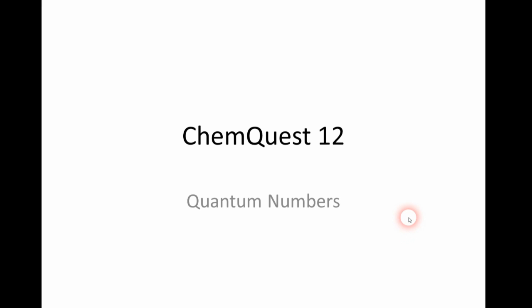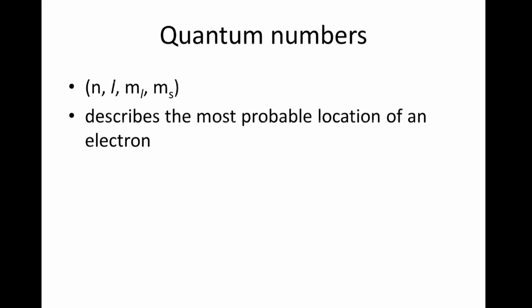We're going to be talking about quantum numbers today. The main concept is that the set of four quantum numbers — N, L, M sub L, and M sub S — describes the most probable location of an electron.